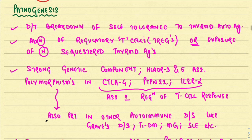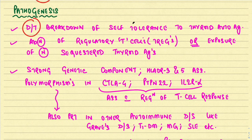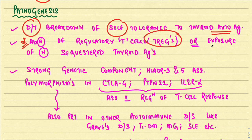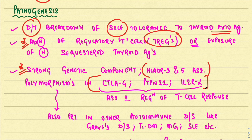Regarding pathogenesis, Hashimoto's disease occurs due to the breakdown of self-tolerance to thyroid autoantigens. Abnormalities of regulatory T cells (TREX cells) or exposure of normally sequestered thyroid antigens have also been proposed. There is a strong genetic component with association with HLA-DR3 and DR5. Polymorphisms in CTLA-4, PTPN-22, and interleukin-2 receptor alpha genes, which regulate T cell response, are associated with Hashimoto's thyroiditis.